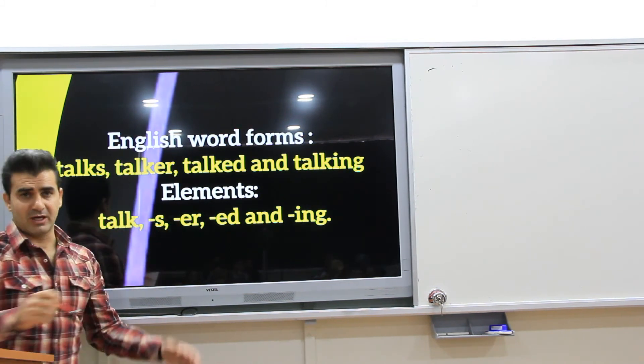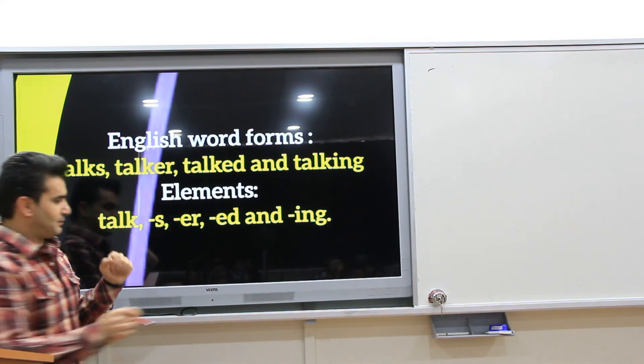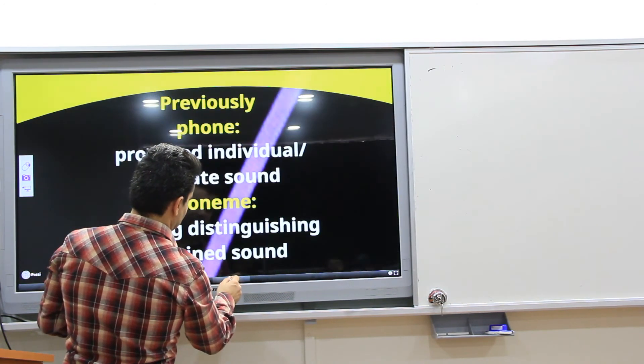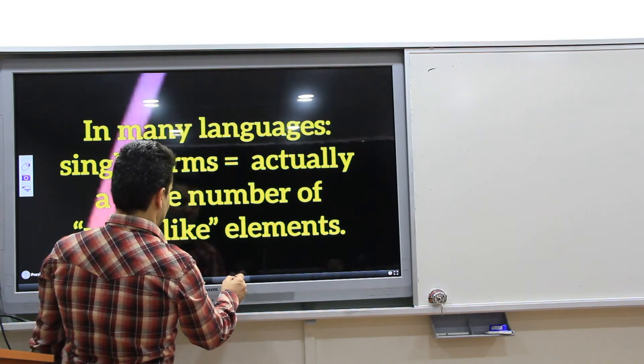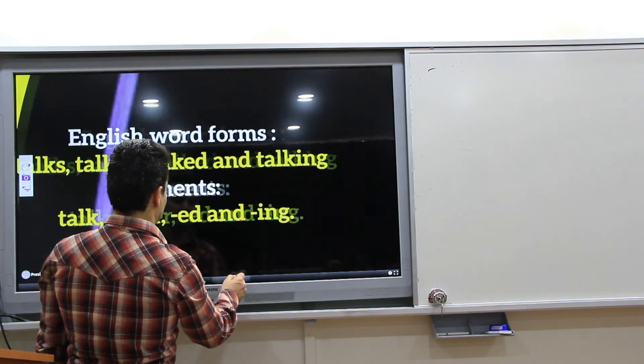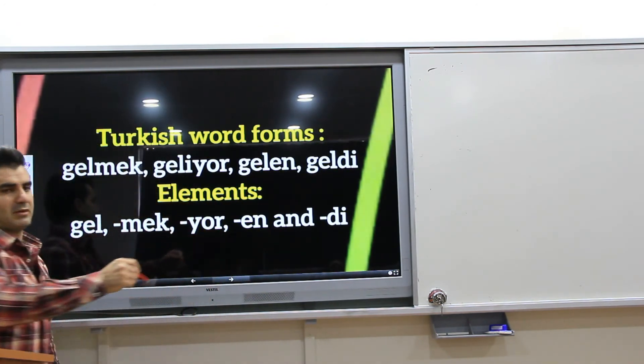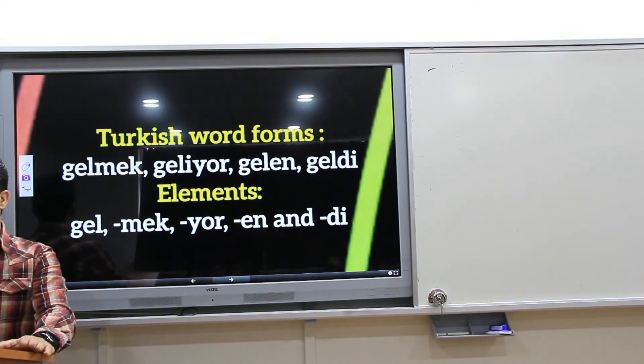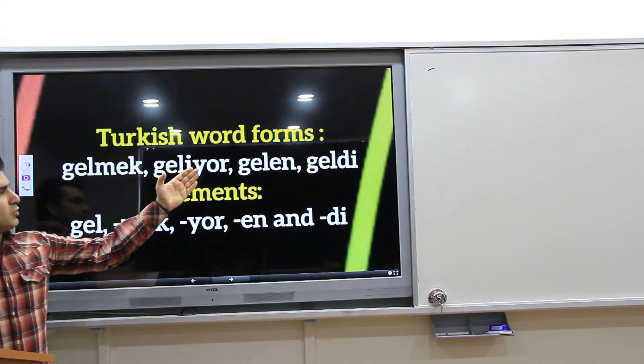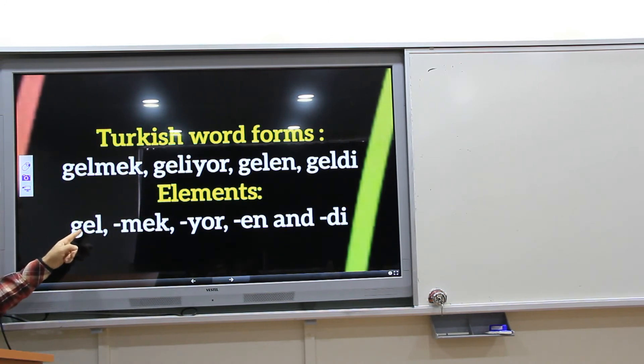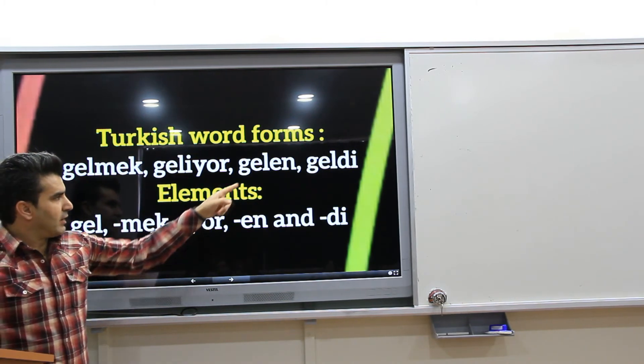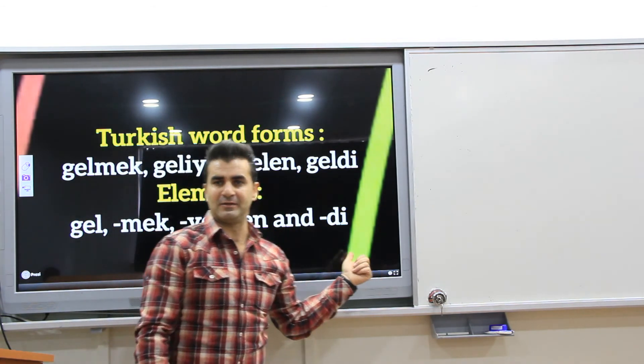Now, in English, as you can see, there are basic elements. For example, let's give Turkish as another example. For example, gelmek, geliyor, gelen, gel. These are elements. Gel, another element is mek, another one, yor, and en, diki.